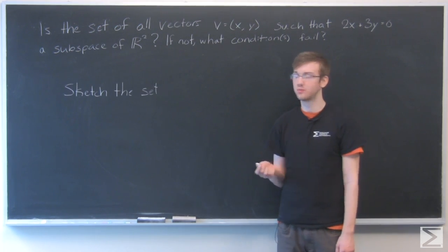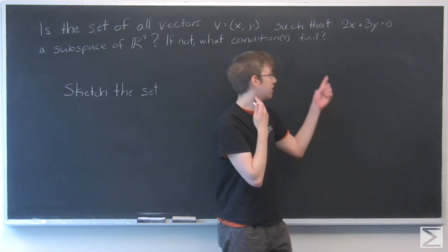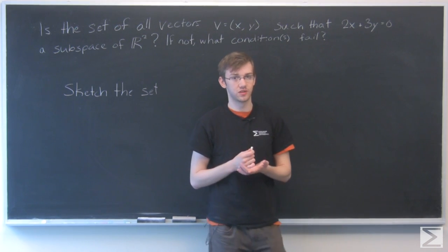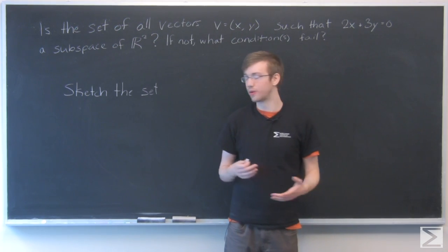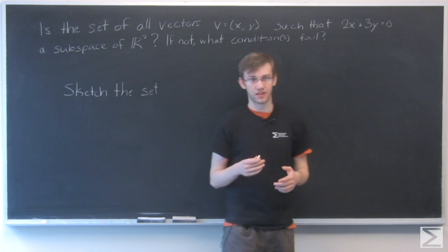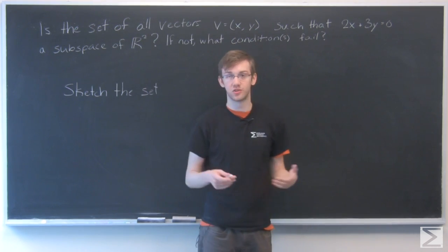For the second part of this problem, we just need to sketch the set where 2x + 3y = 0. We're going to put that equation into y = form and plot it on a graph. That's what this subspace of R2 is going to look like.